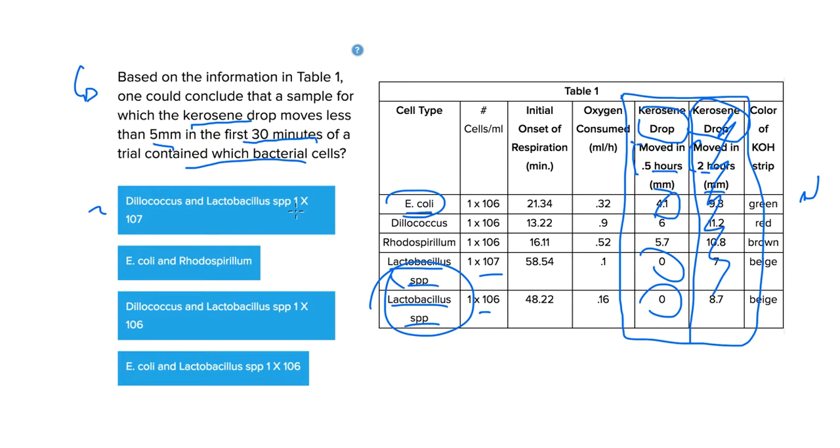Dilococcus and Lactobacillus spp 1x10^7. Well, the Dilococcus was greater than five millimeters after 30 minutes, so we can get rid of that.